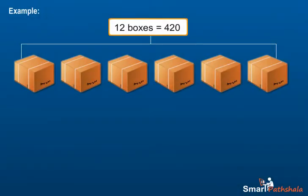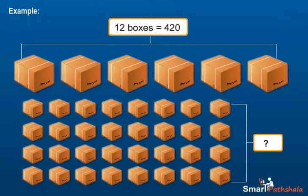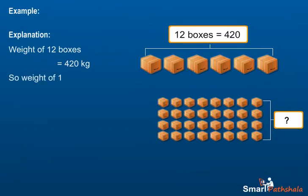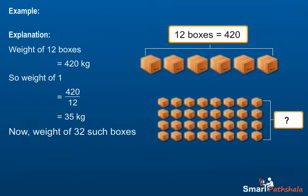Example. The weight of 12 boxes is 420 kg. What is the weight of 32 such boxes? We have weight of 12 boxes is equal to 420 kg. So weight of 1 box is equal to 420 kg divided by 12, which is equal to 35 kg. Now weight of 32 such boxes is equal to 35 into 32 kg, which is equal to 1120 kg.